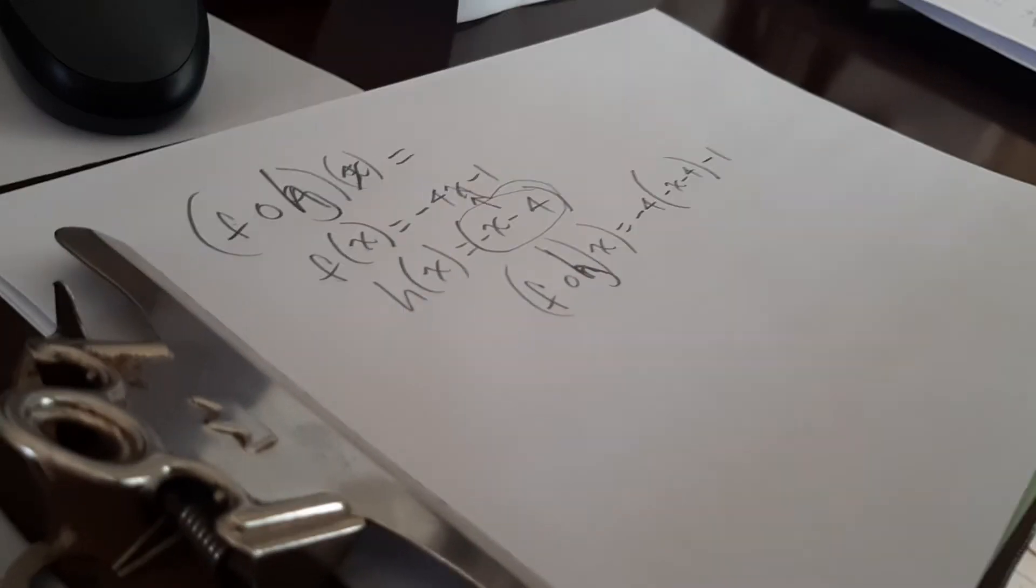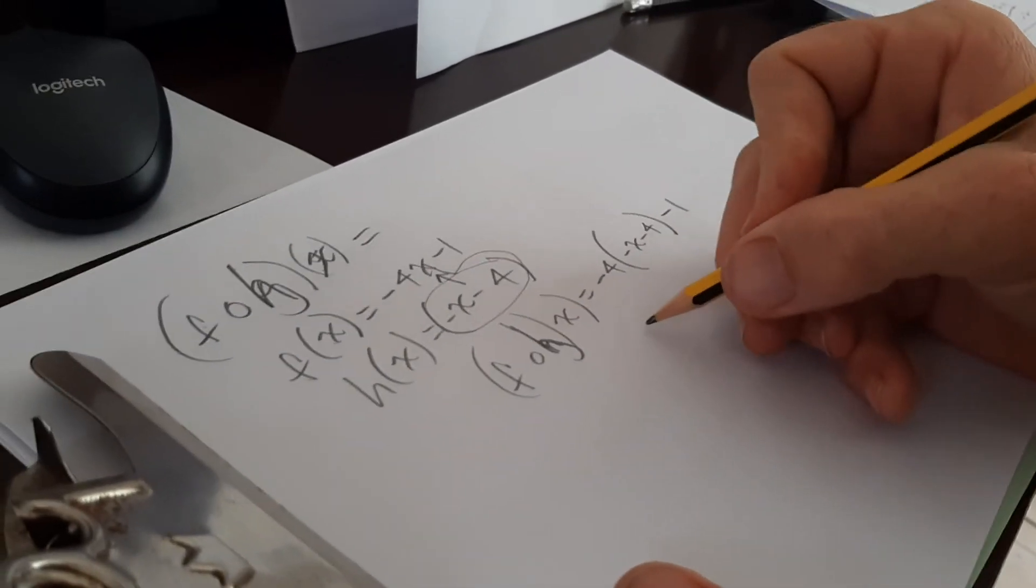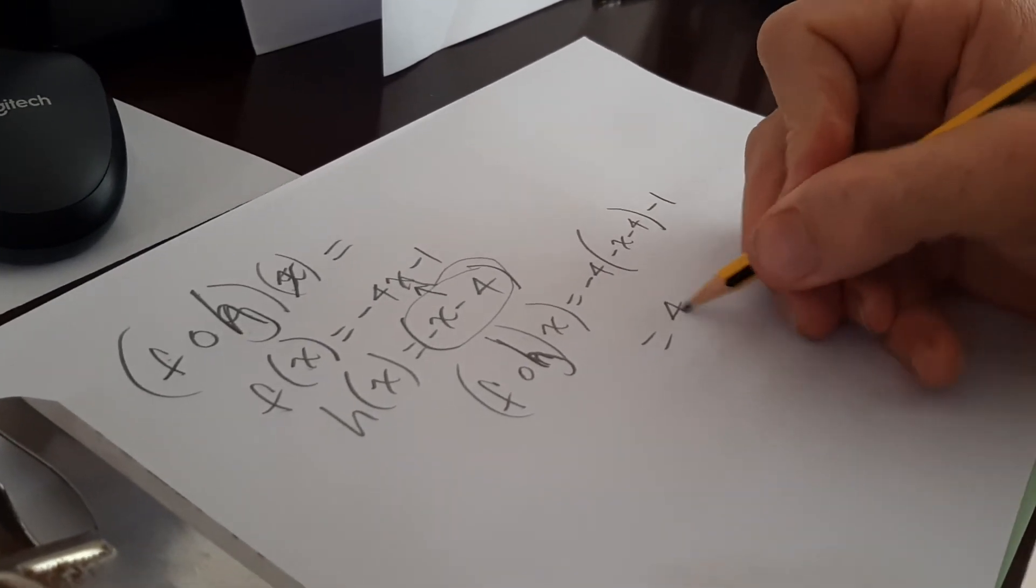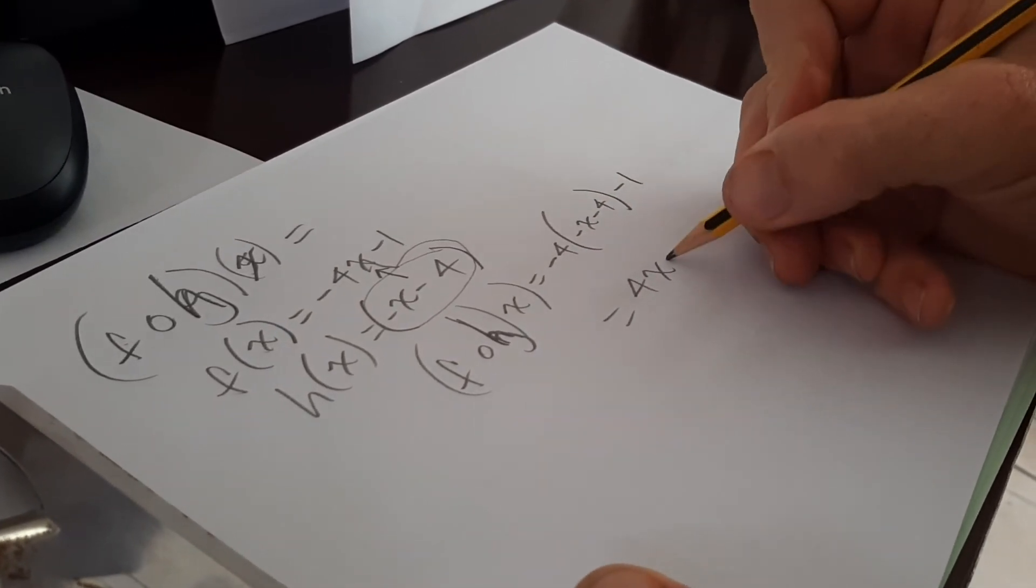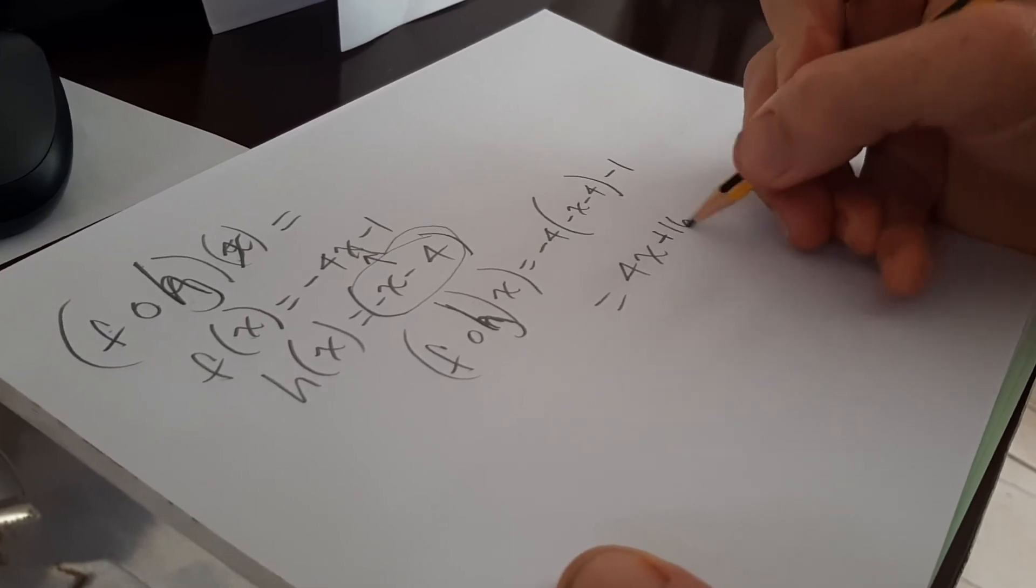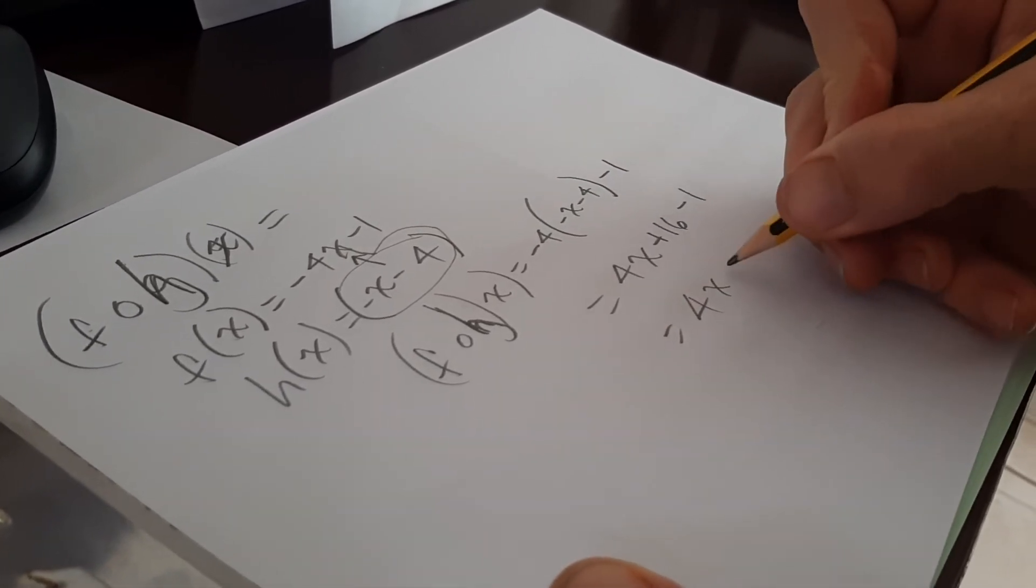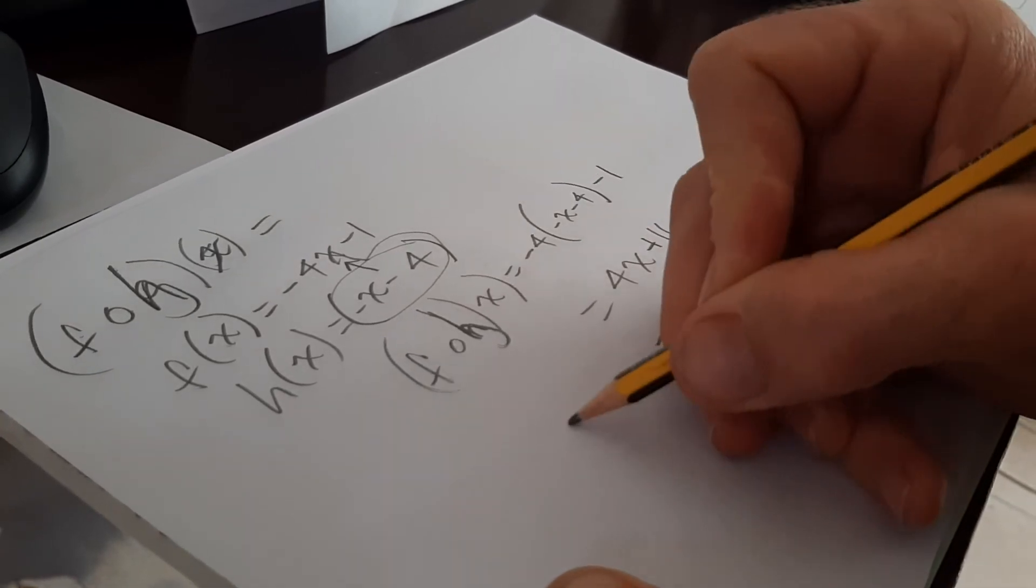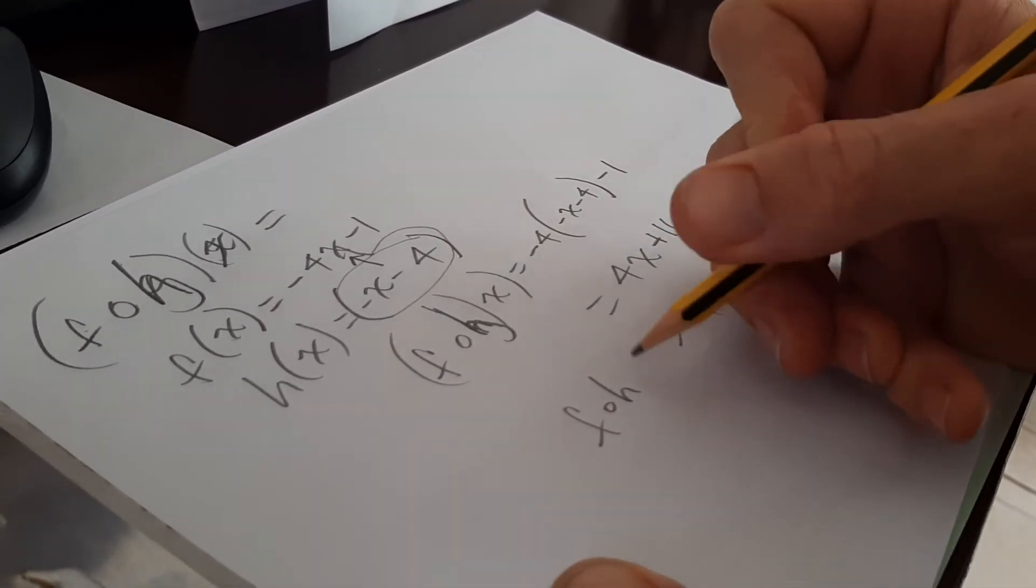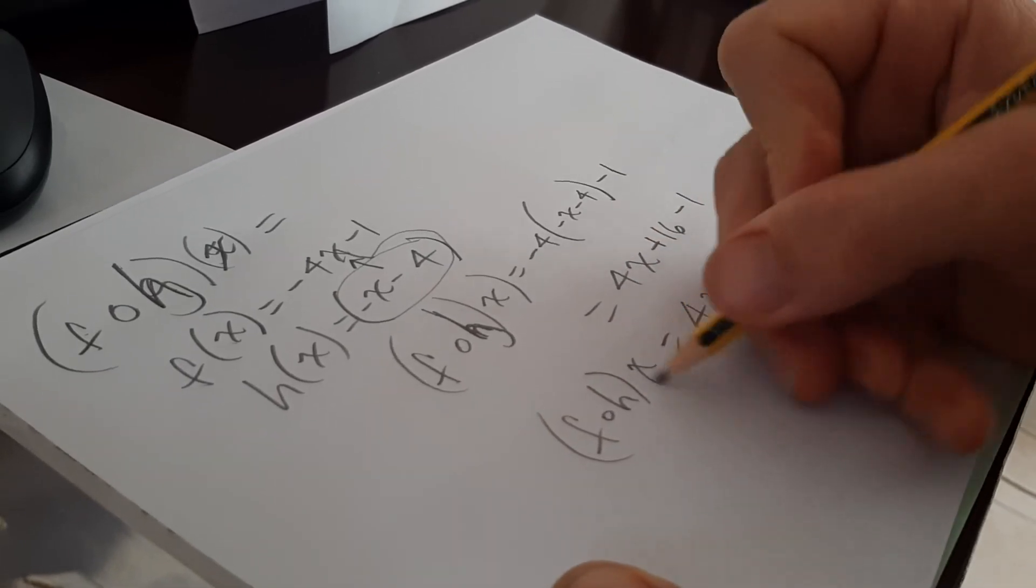So I substitute h of x in for the x in f of x. In other words, f of x swallows up h of x. And I simplify, minus 4 times minus x, minus 4 times minus 4.